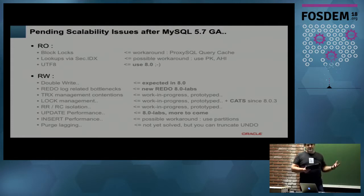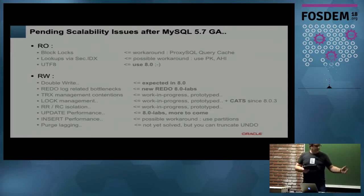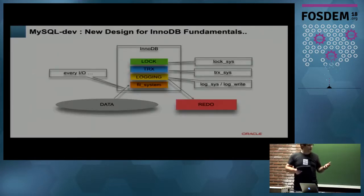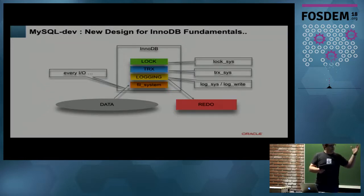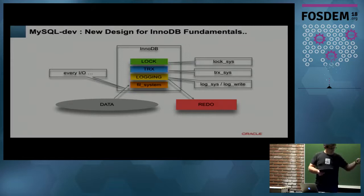For insert performance, we are working here. As soon as you keep the B-tree cached — for example using partitions or different tables — you can go very fast on insert. Otherwise the B-tree is impacting you. For purge: if purge is lagging in production, with 8.0 you can truncate undo, so you can reclaim the space. The most killing problem is the redo log. As soon as you optimize everything else and then cannot write to the redo log as fast as you want, you are blocking. This is the final bottleneck that you hit.